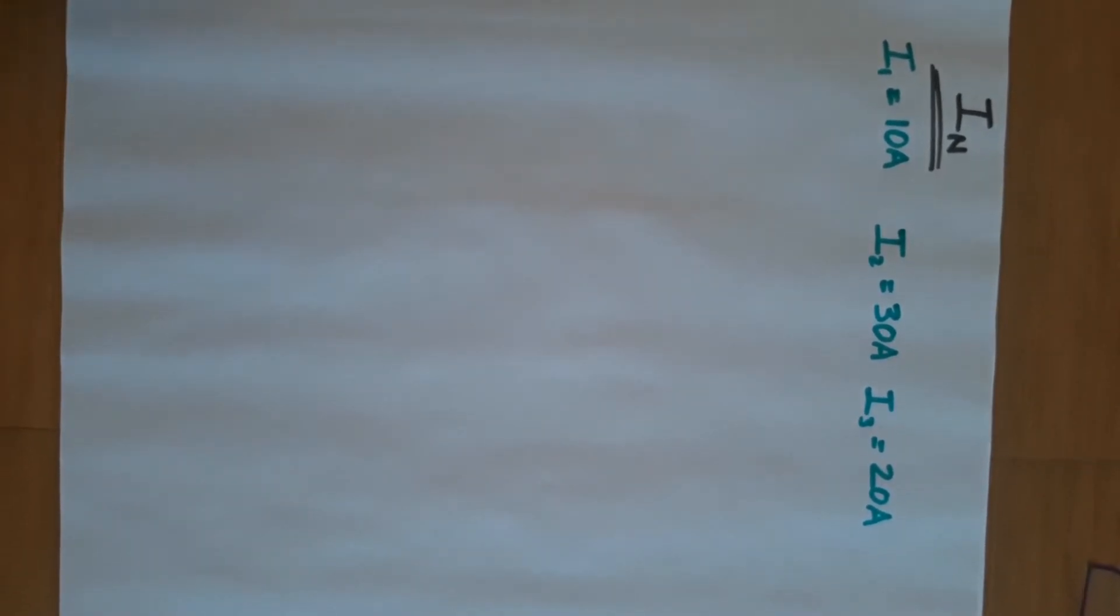To find the neutral current in an unbalanced system, we can do one of two methods. We can either find the current graphically, which we're going to do right now, or we can do it by formula, which will come up next.